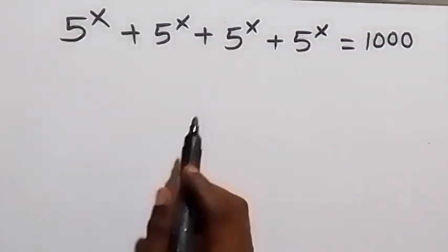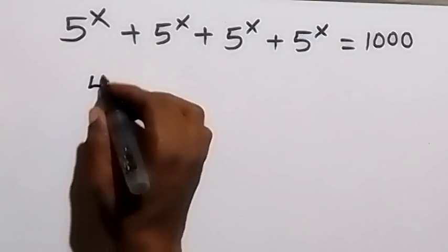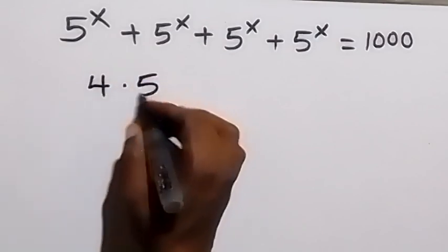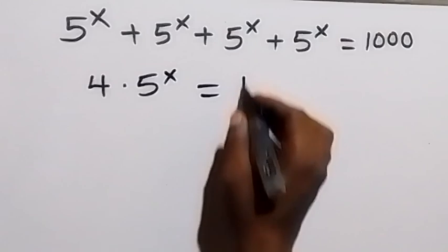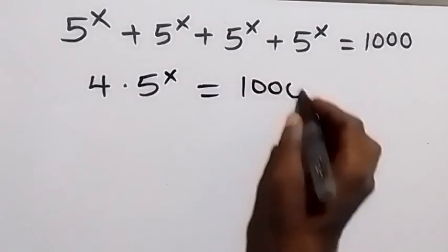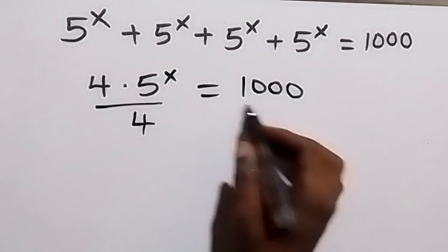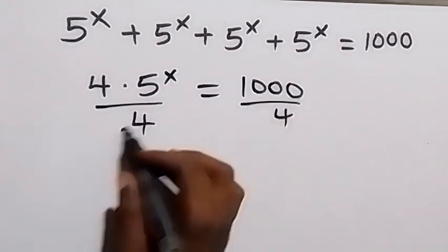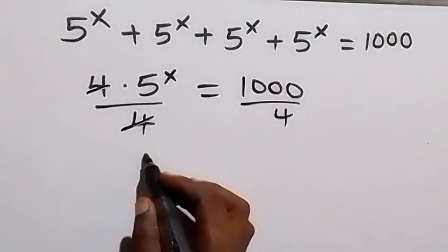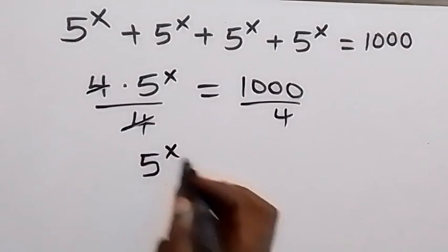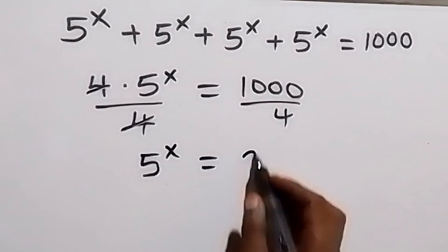From here we have 4 of this, so we can write it as 4 times 5 raised to power x, and this equals 1000. From here we divide both sides by 4, so we cancel 4 and this will remain 5 raised to power x equals 1000 divided by 4.